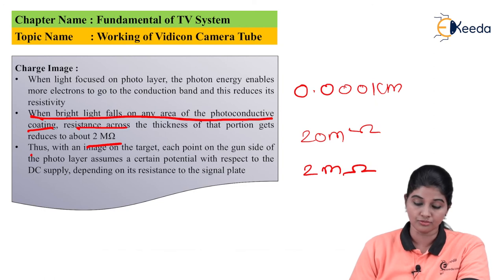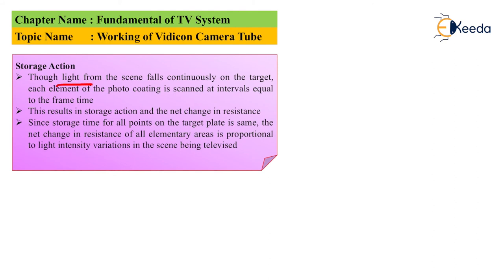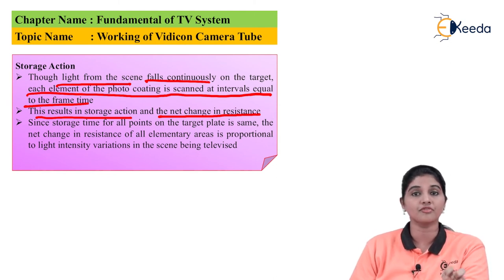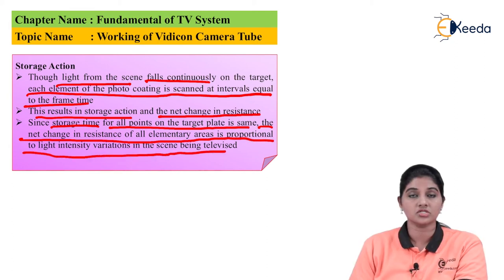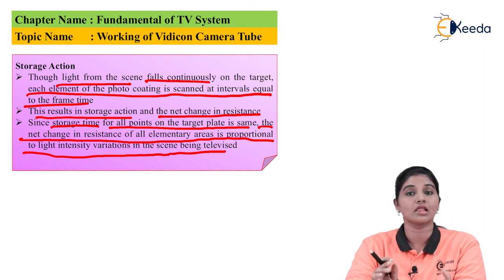Regarding storage action: in the Vidicon camera tube, the light from the scene falls continuously onto the target and each element of the photo coating is scanned at equal intervals equal to the frame time. This results in storage action and a net change in resistance. When the intensity of light changes, a positive pattern is created on the face of the photo layer, resulting in a reduction in resistance value. The net change in resistance of all element areas is proportional to the light intensity variation of the scene being televised. The resistance decreases when light intensity is higher and increases when light intensity is lower.